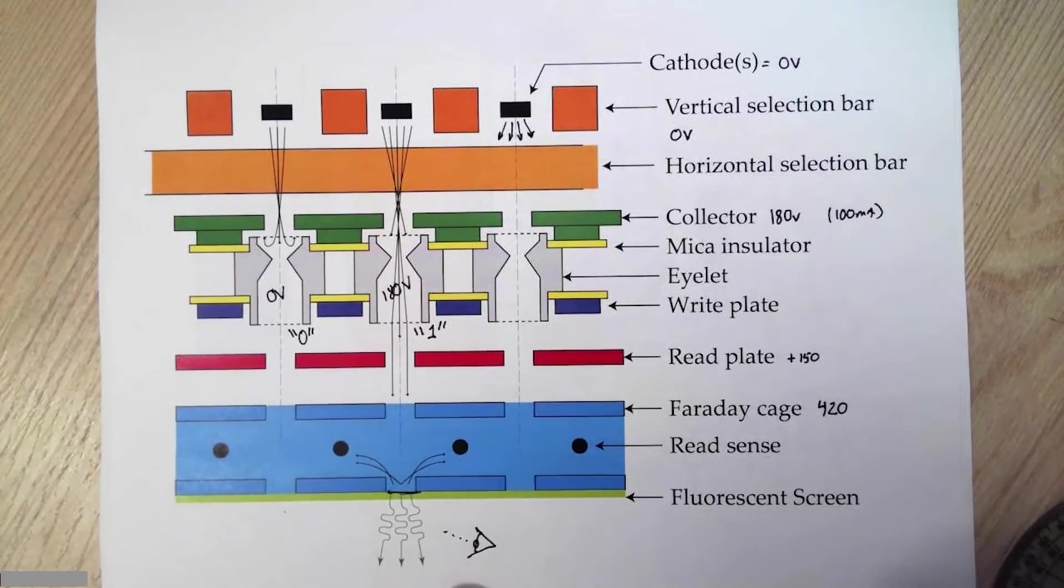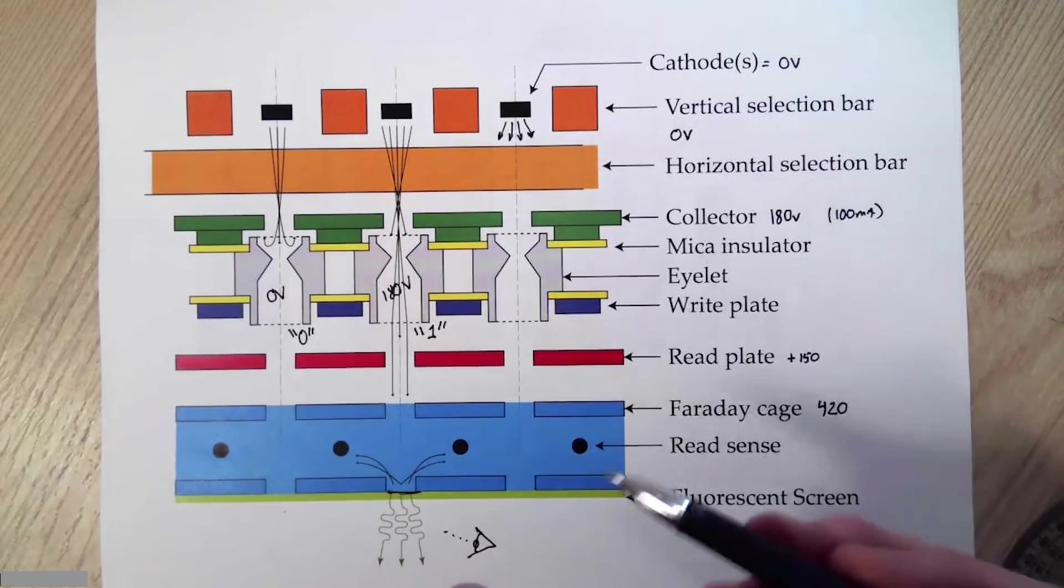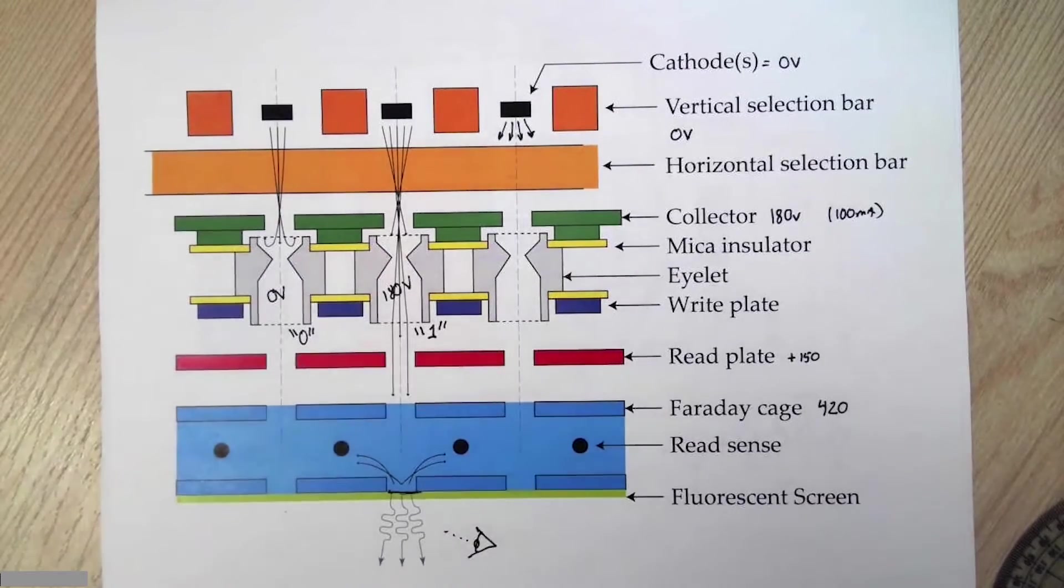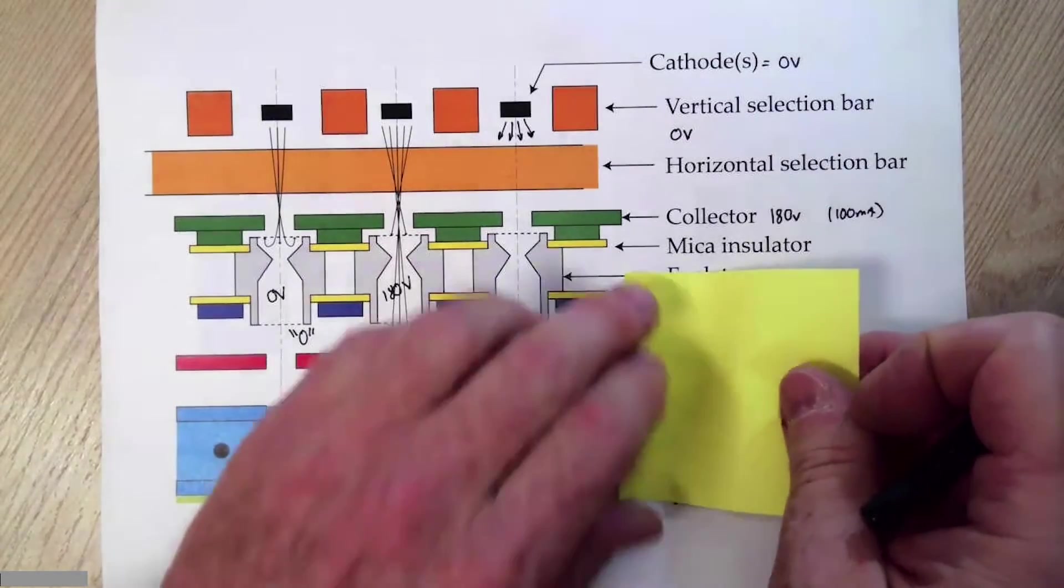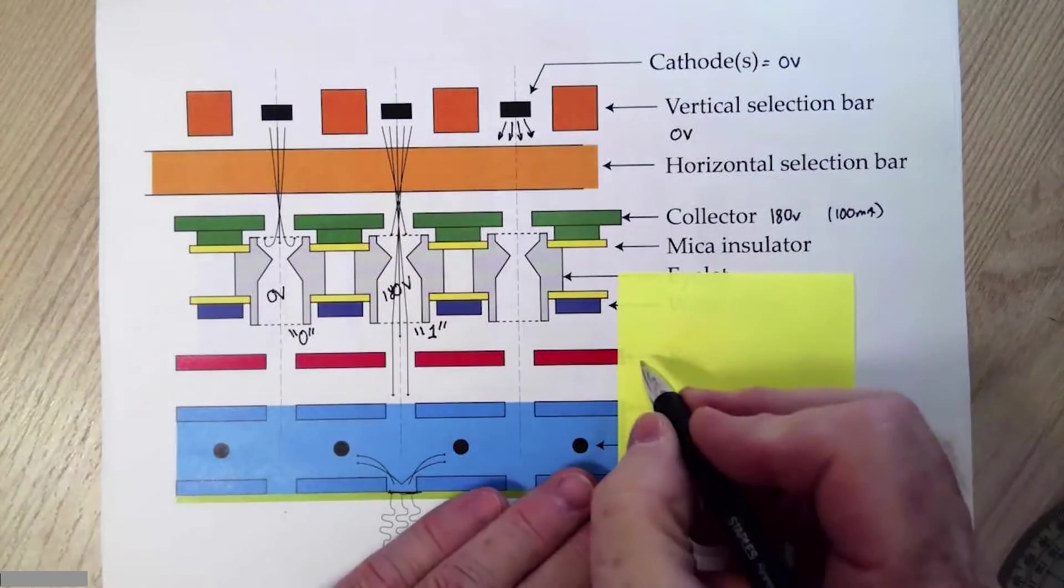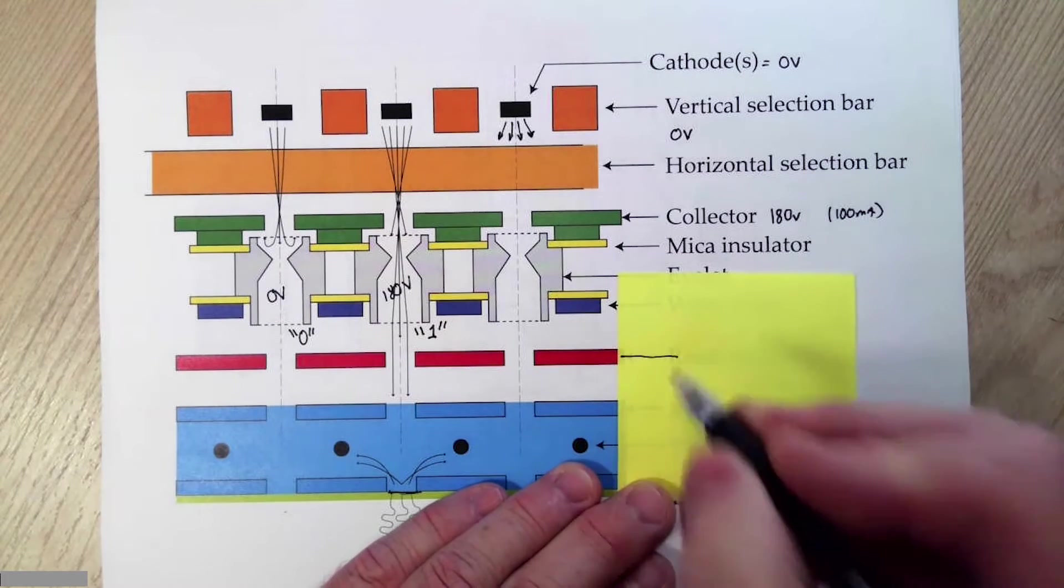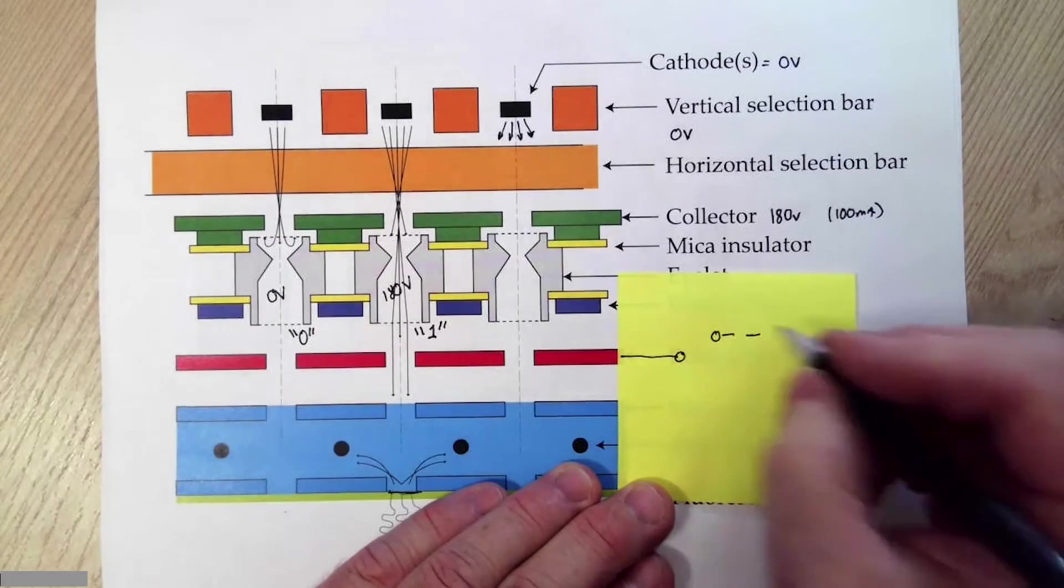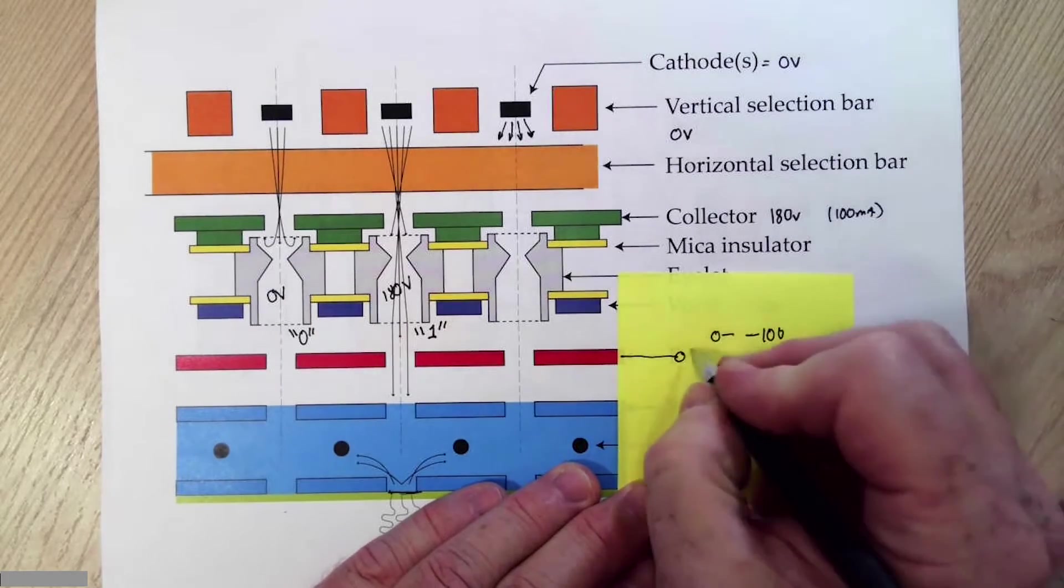In this process, we've got a visual indication of bit status. But if I'm trying to electronically read from the memory, I need an electronic process of getting my information. And this is where the read plate comes in. If I'm trying to do an electronic read, the idle potential for this read plate needs to be negative. So we will start there. Minus 50, minus 100 volts, I think I settled on minus 100.